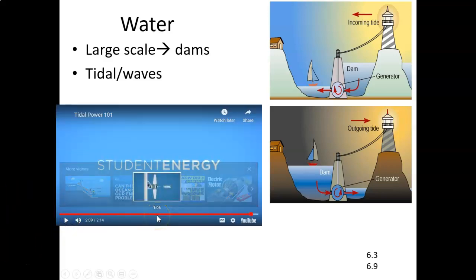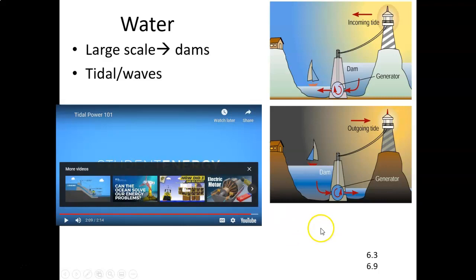There's another type of technology that can take advantage of waves, particularly on rocky coastlines. You can create a cavern so that as waves come in, it displaces air that turns a turbine, and then pulls out — so you have air displacing as a wave crashes in and as it comes out, creating perpetual motion of energy. There are a lot of new technologies being developed to take advantage of both tides and waves.